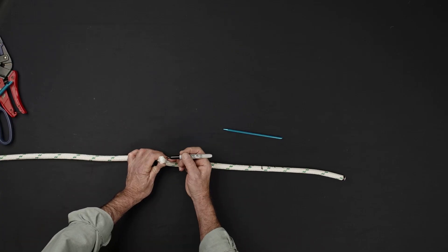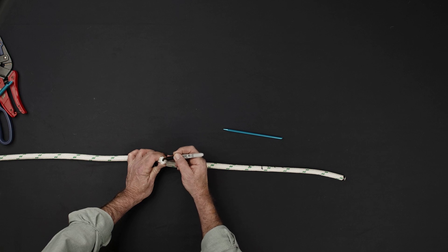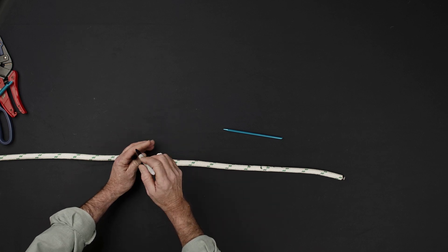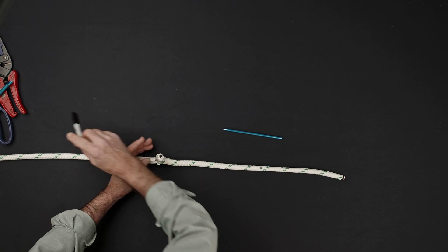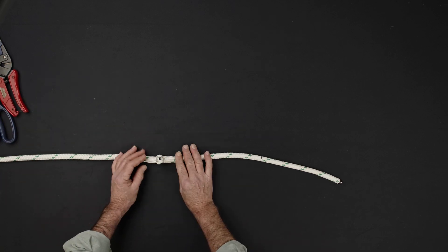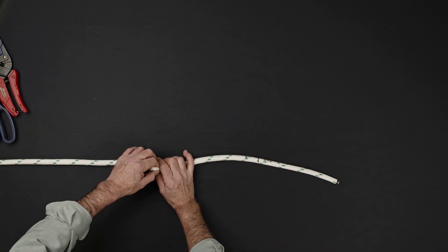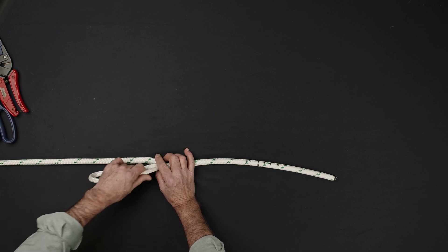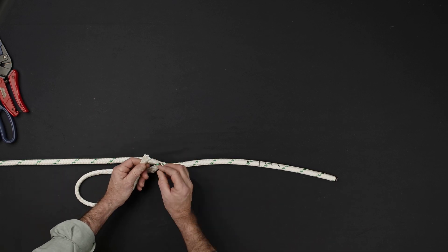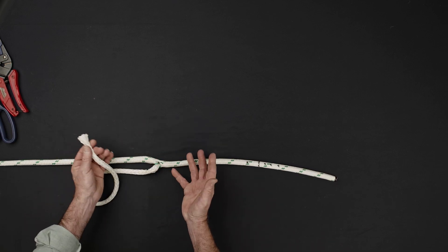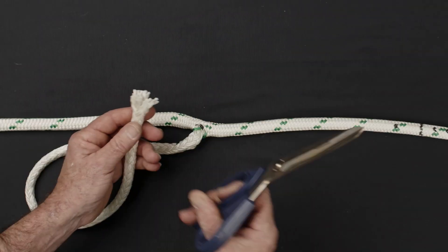Once the core is removed from the sleeve, make a reference mark at the point where the core exits the sleeve. Extract the remainder of the core. When you get to the end of the core, make a 45 degree taper and tape it tightly.